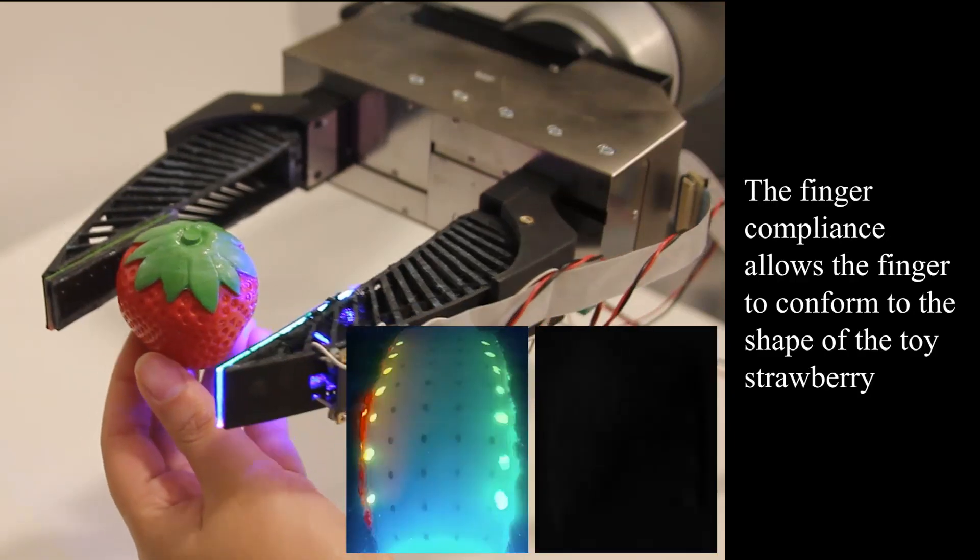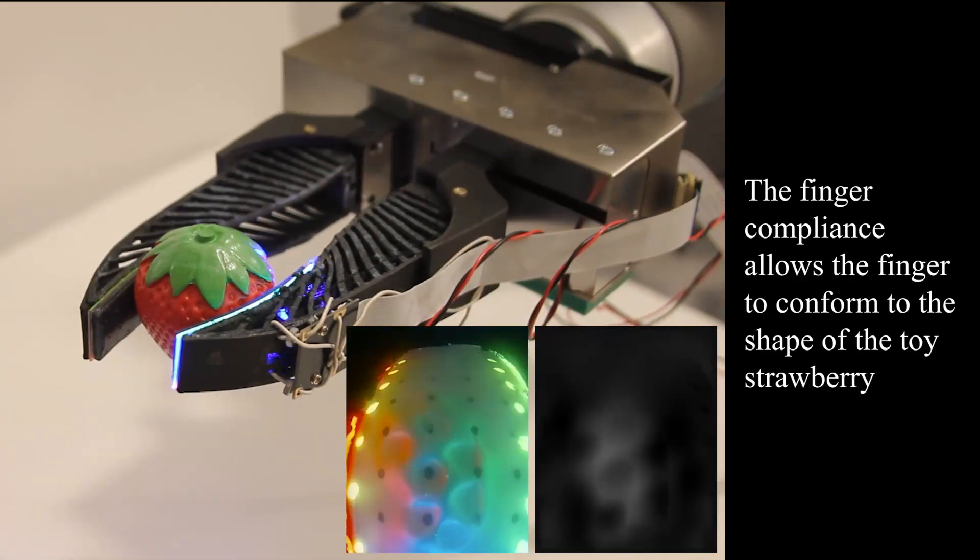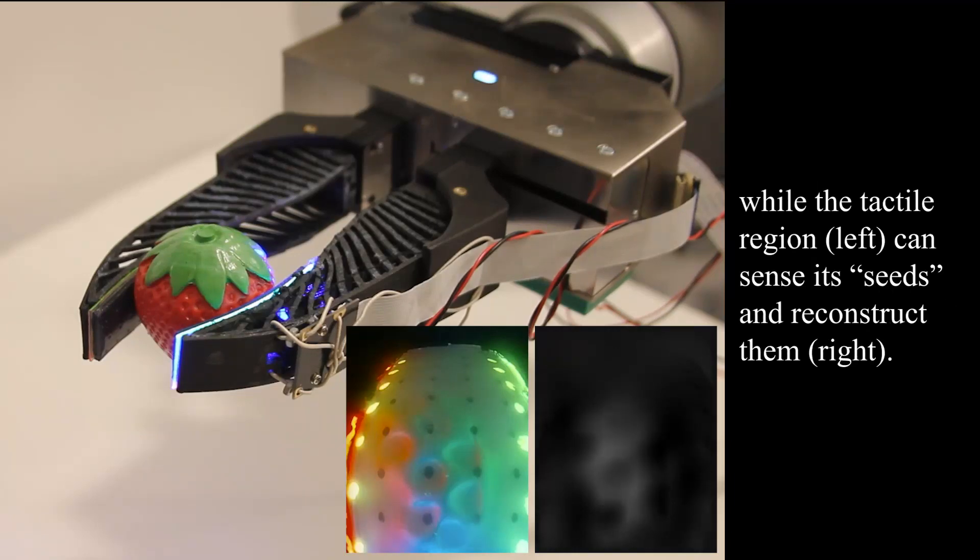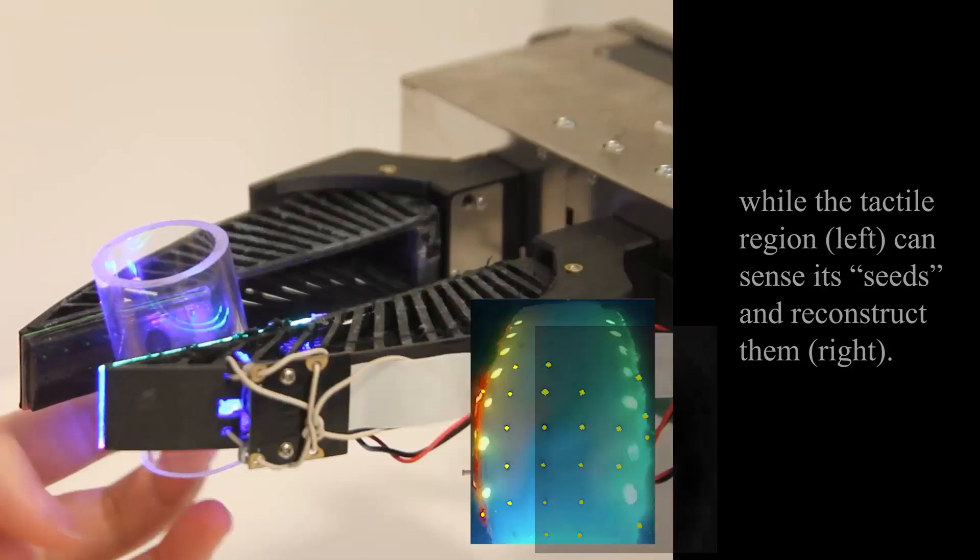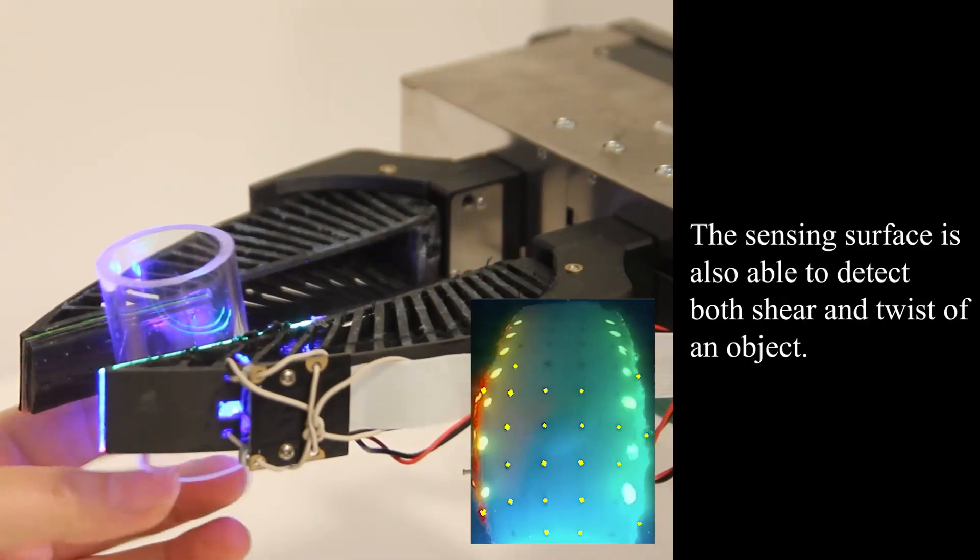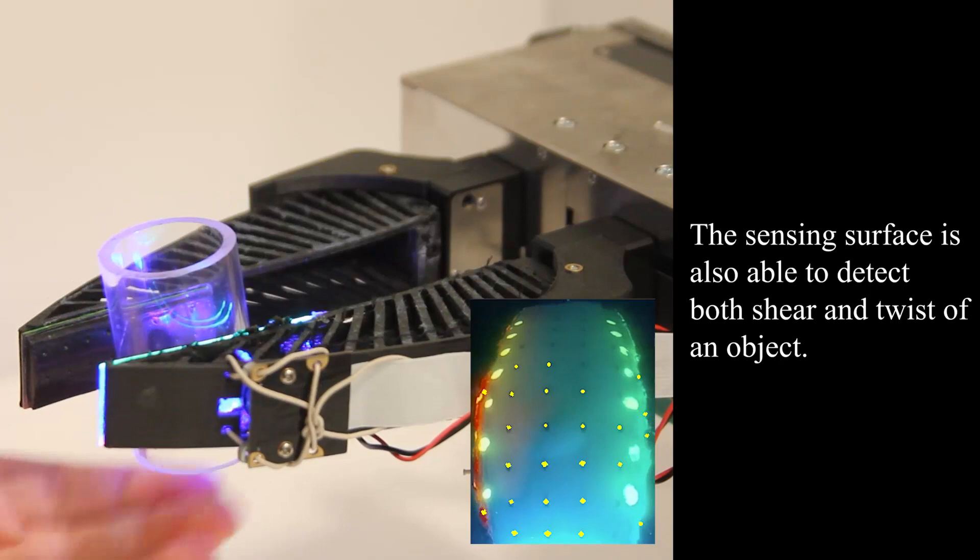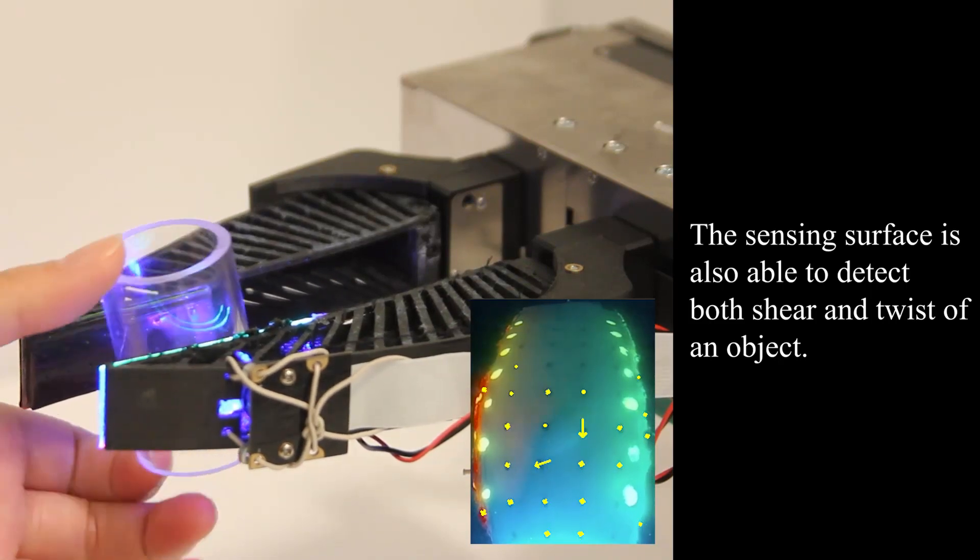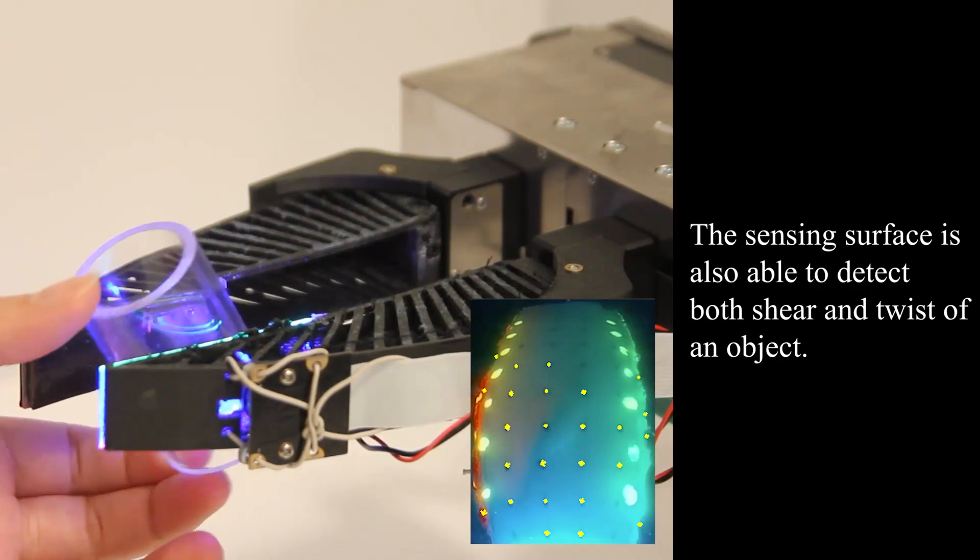The finger compliance allows the finger to conform to the shape of the toy strawberry, while the tactile region on the left can sense its seeds and reconstruct them on the right. The sensing surface is also able to detect both shear and twisting motions applied to an object. These motions are shown by the arrows.